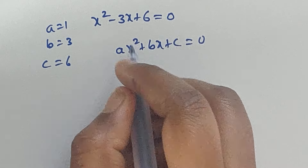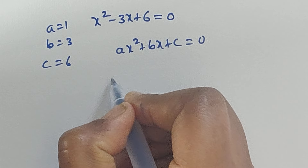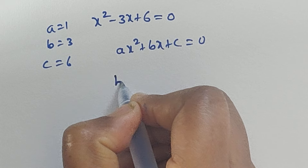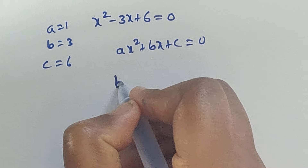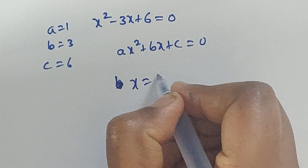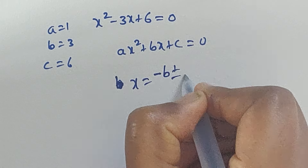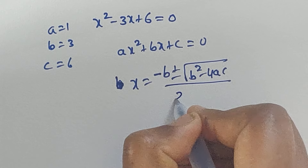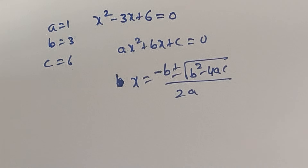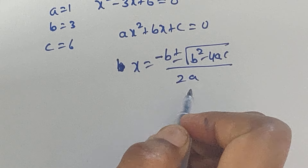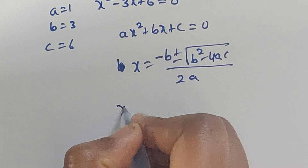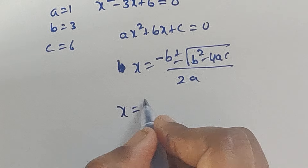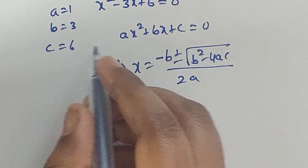So here we can use the quadratic formula: x equals minus b plus or minus square root of b squared minus 4ac, divided by 2a. Now we substitute the values of a, b, and c into this equation.